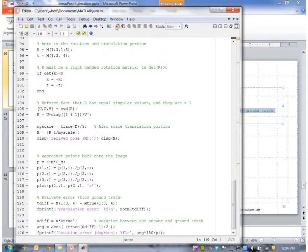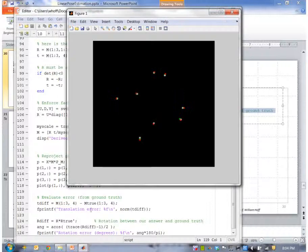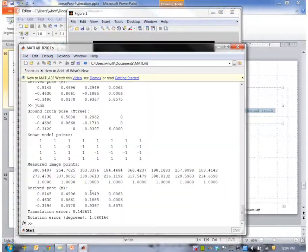Okay, so let's go ahead and run this. So in this case, the error was 0.1 between the ground truth pose and our derived pose. That's the translational portion. And the rotational error in degrees is 1.08.